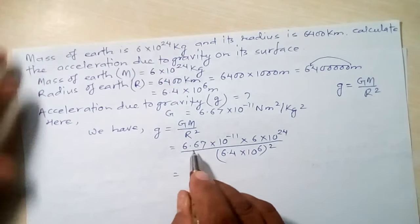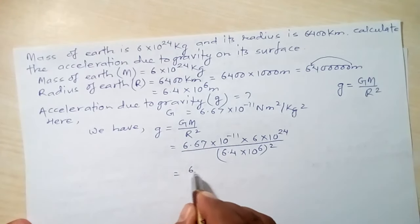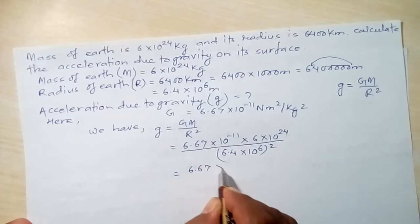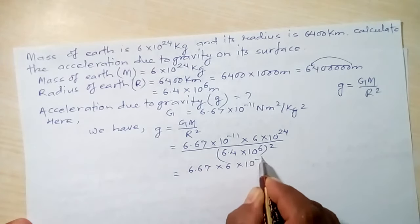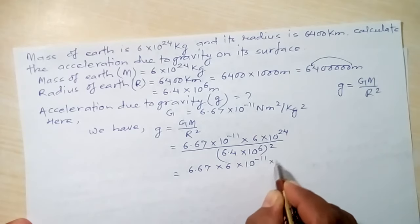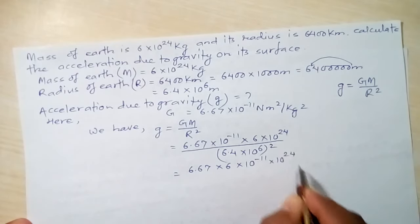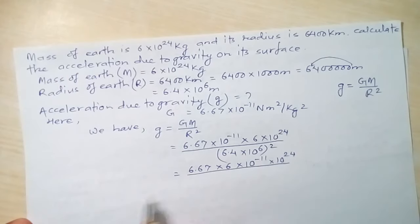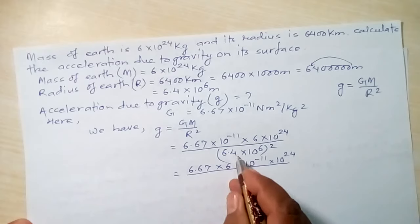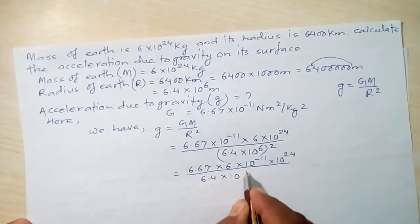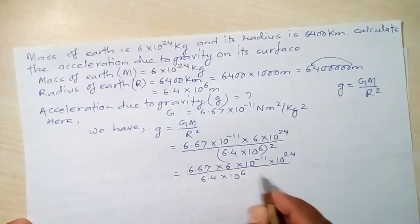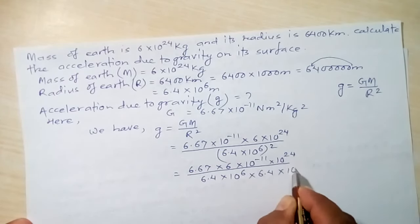It will be more comfortable to group the numerical coefficients together and the powers of 10 separately. Squaring the denominator means writing 6.4×10⁶ twice: 6.4×10⁶ multiplied by 6.4×10⁶.